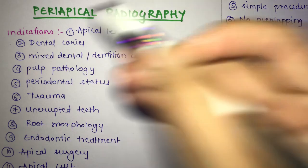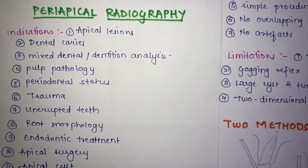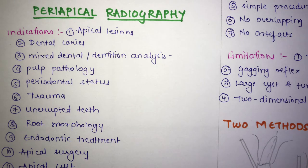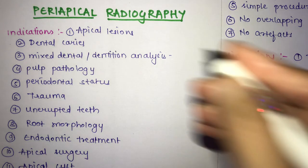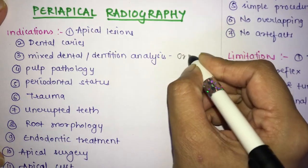The indications of periapical radiography are as follows. First, apical lesions — periapical radiography is very useful in the detection of apical region lesions. Second, dental caries — for detection and evaluation of dental caries. Third, mixed dentition analysis — helpful in orthodontic treatment.